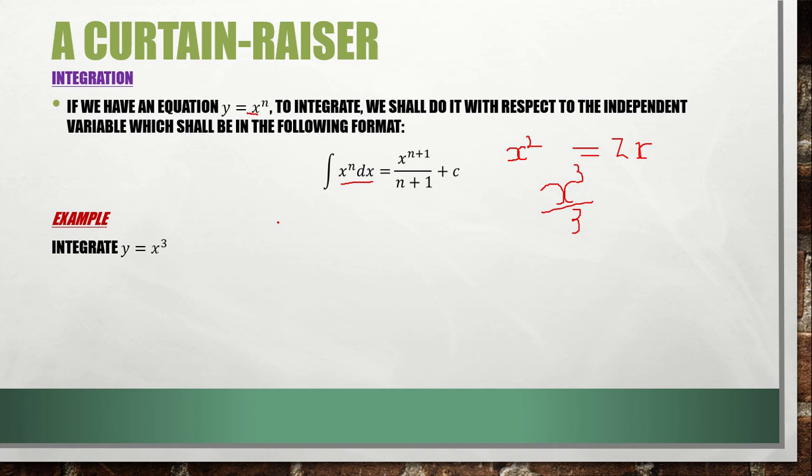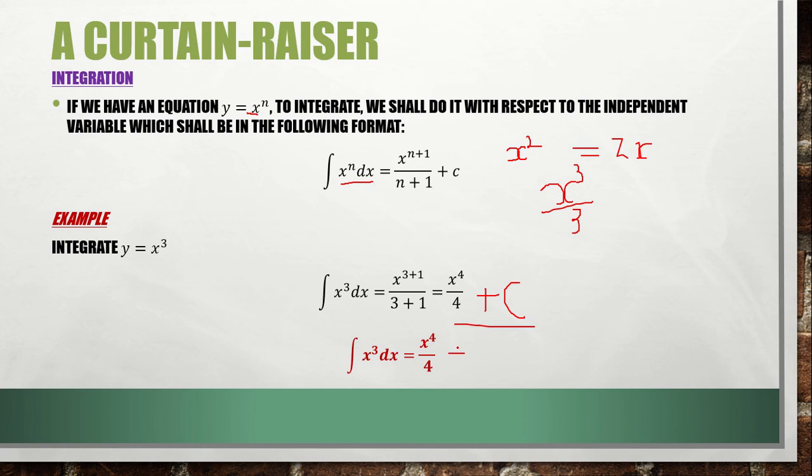If you integrate y equals x cubed you will end up with x to the power 4 divided by 4, plus a constant. That constant must always be included in your solution.